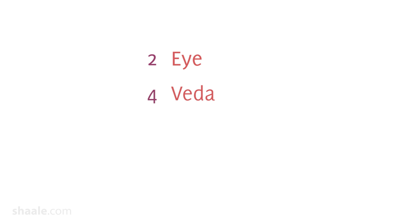The Bhuta Sankhya system has two parts to it. You choose a particular element of nature to represent a certain number. For instance, if someone were to say 'eye,' the number that strikes is 2. If one were to say 'Veda,' the number that comes to mind is 4. For representing 1, they chose Chandra — there is only one moon for the earth.